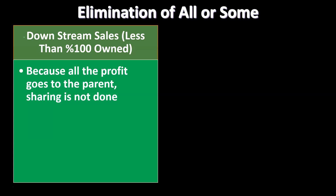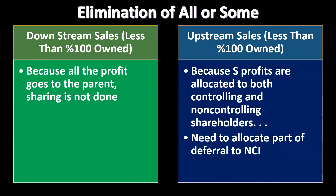We break this down into categories. For a downstream sale — from the parent to the subsidiary — the inventory was sold from the parent to the subsidiary. All the gains from that sale went to the parent. Since all the gains went to the parent, we don't need to think about breaking this up between controlling and non-controlling interest percentages. Because all the profit goes to the parent, sharing is not needed in the reversal process.